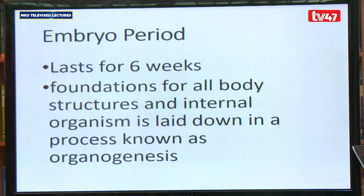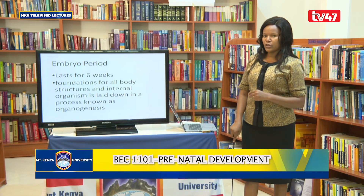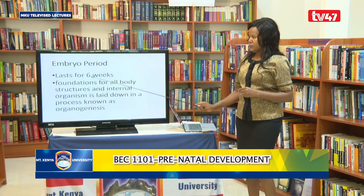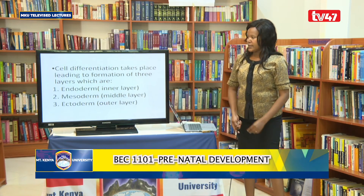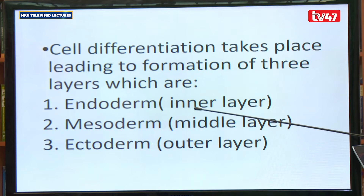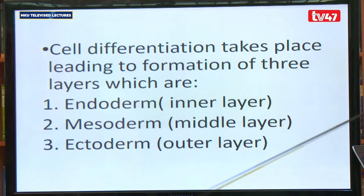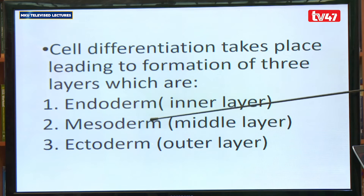In the embryo period, there are two main processes that happen. One is a process known as organogenesis — the process by which a foundation is laid down for all the body organs in a human body. This happens during the embryo period. The other process is cell differentiation, which leads to the formation of three layers: the endoderm, which is the inner layer; the mesoderm, which is the middle layer; and the ectoderm, which is the outer layer. Each layer is mandated with the duty of developing into specific body organs.